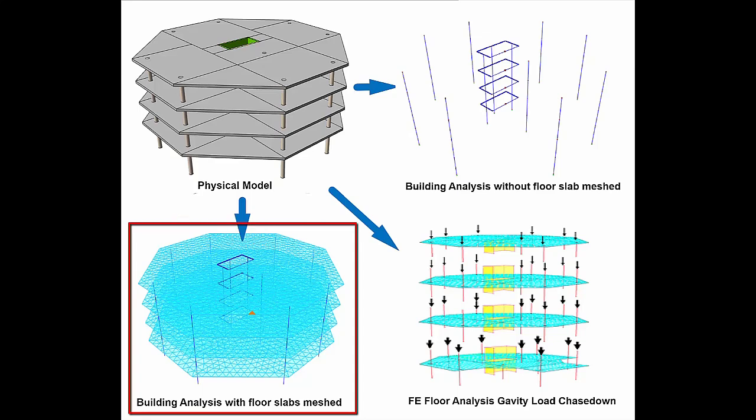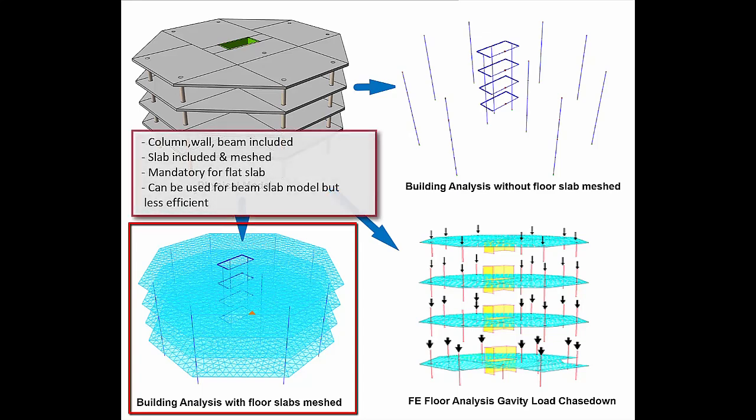The next method is building analysis by including the slab meshed. In this case, all the floor slabs are meshed. This analytical model is correct and ideal for flat slab system, as the flat slab load can be captured directly by the columns and walls without having beams. Although this method can also work for beam slab system, analytically, it is a bigger and more complex model, hence not that efficient.